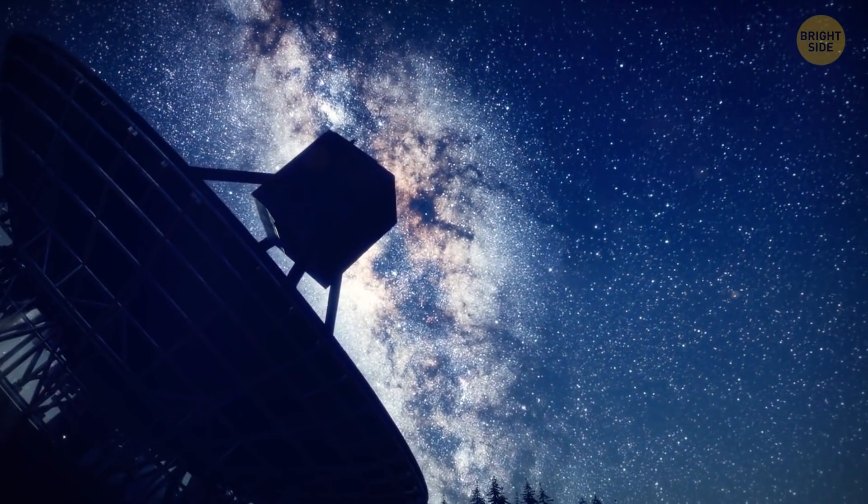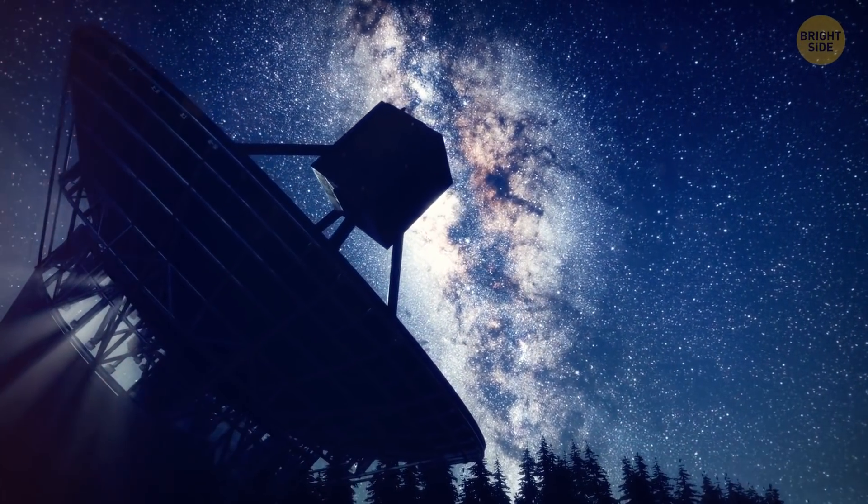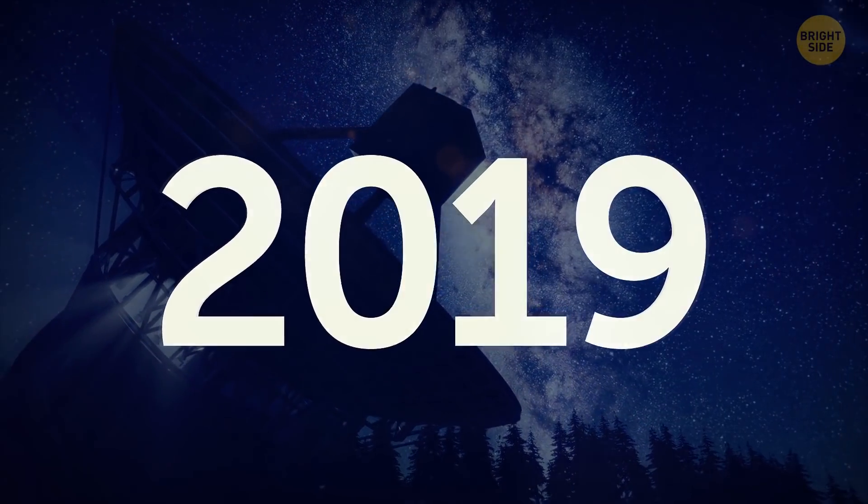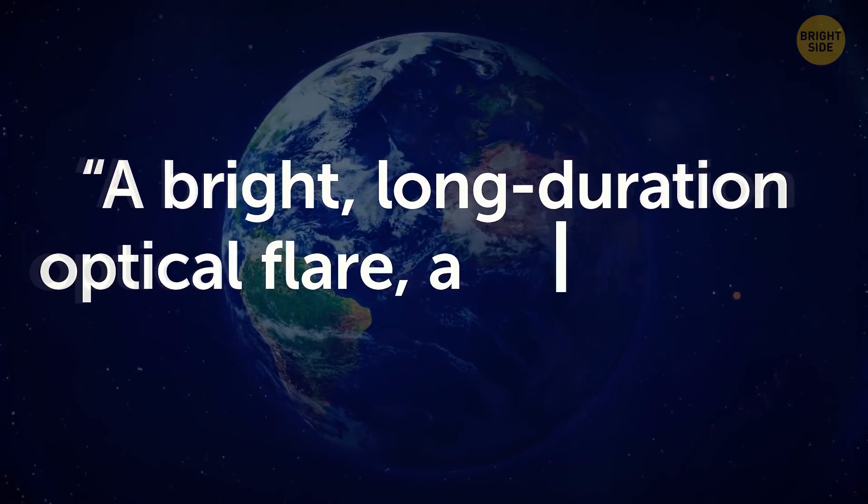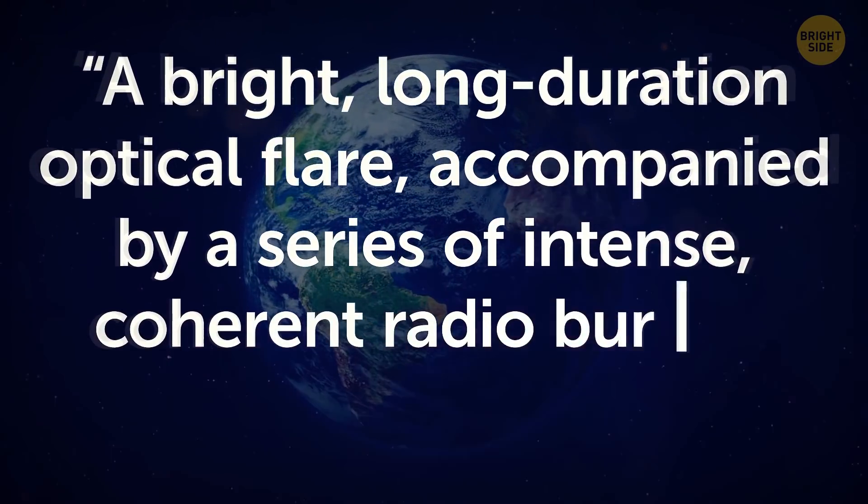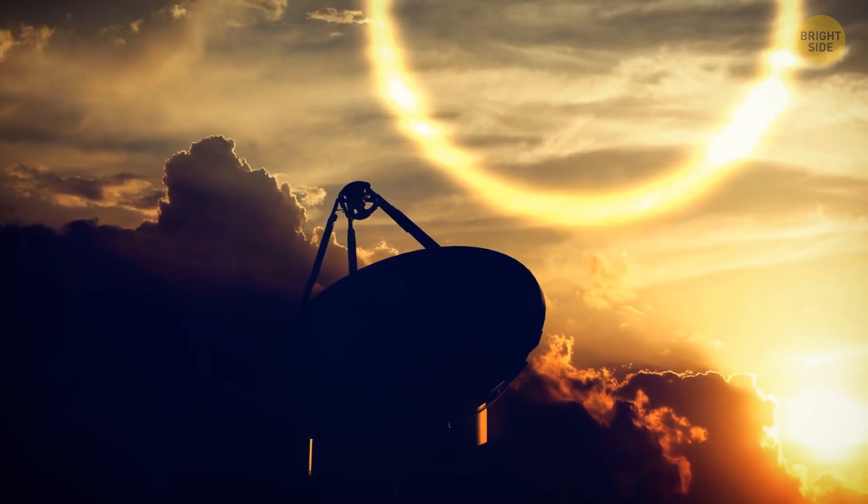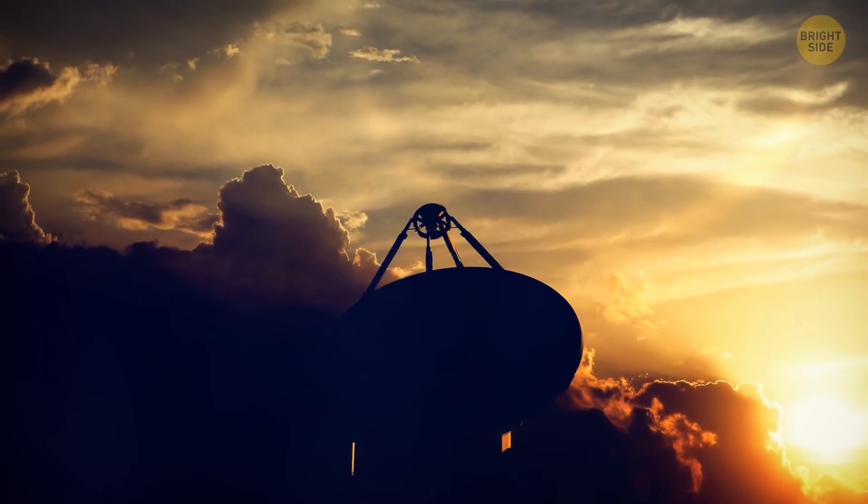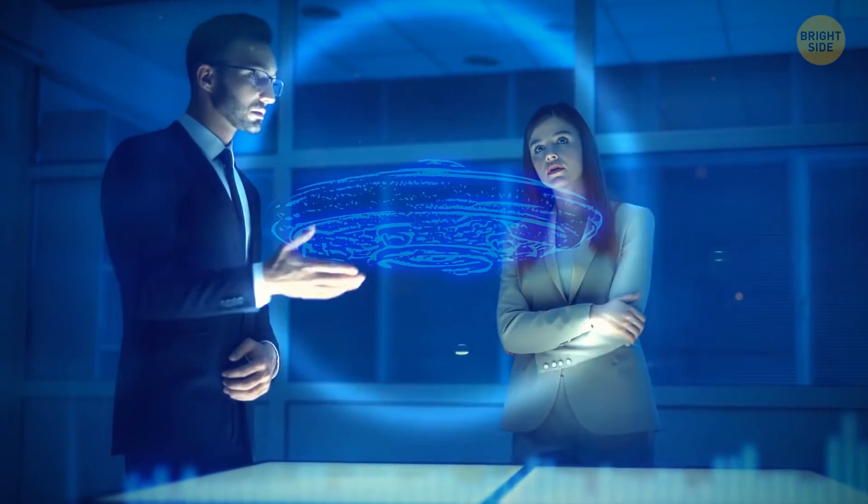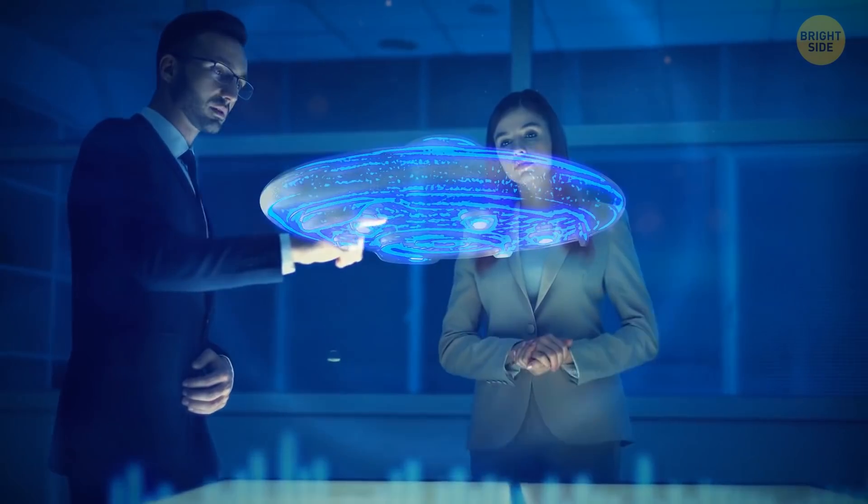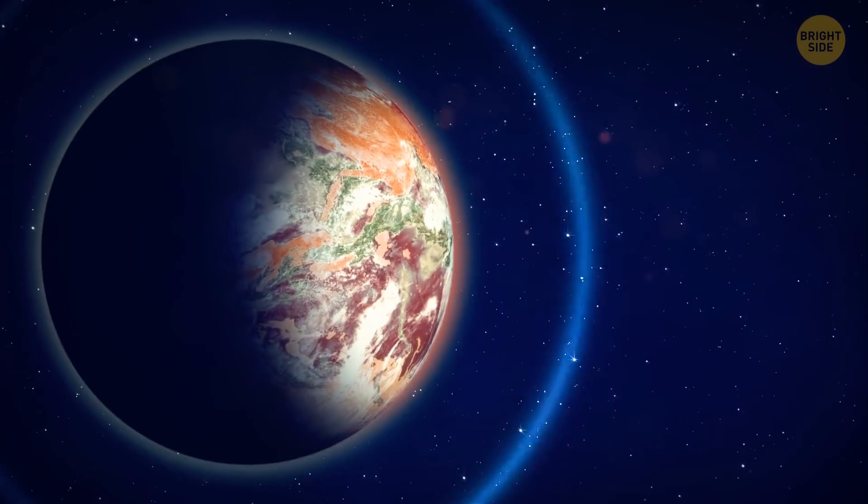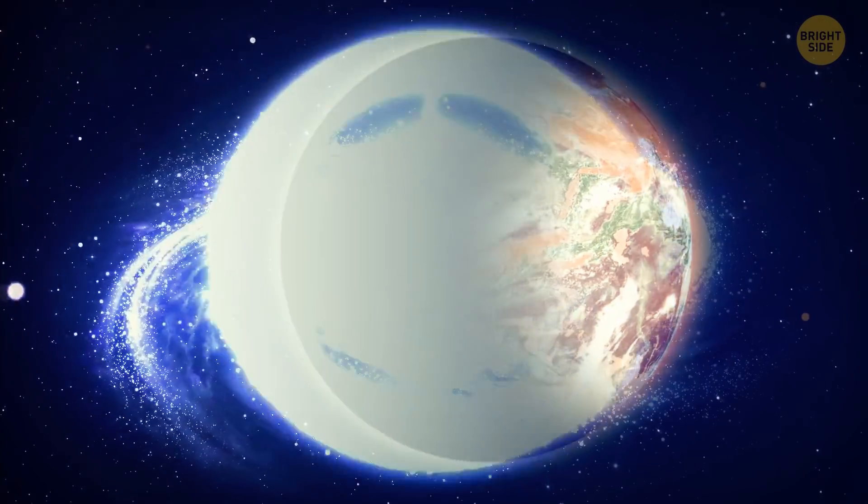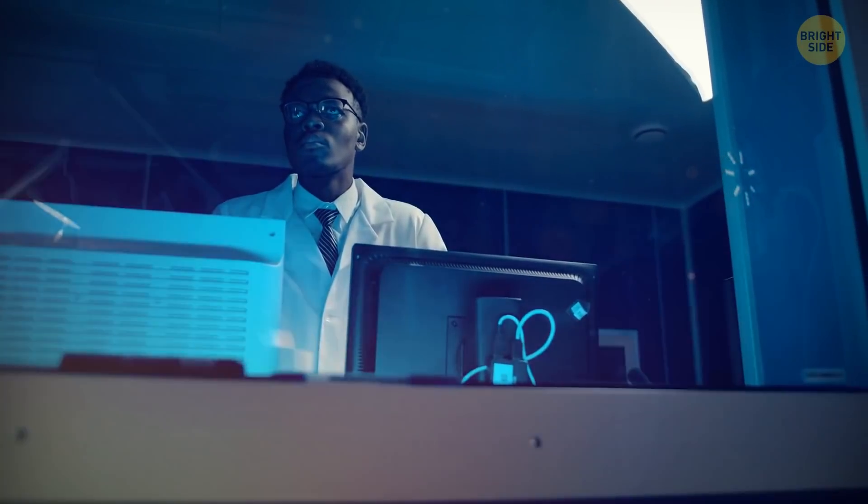And it could be this civilization that sent us the strange signal that astronomers caught in 2019. Scientists described it as a bright, long-duration optical flare, accompanied by a series of intense, coherent radio bursts. This radio signal was observed for 30 days by one of the radio telescopes on Earth. Scientists thought the signal was artificial and could have been sent by an extraterrestrial civilization. Presumably, the signal came from Proxima Centauri b, or one of the moons that might be in that star system. But further observations failed to detect the signal.